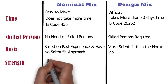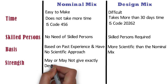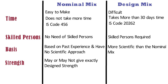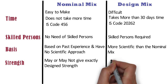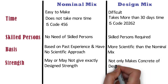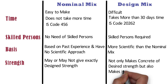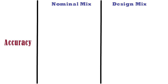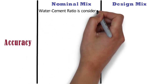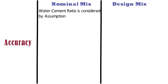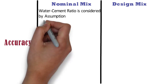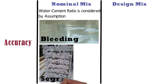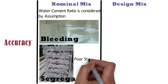Strength: Nominal mix may or may not give exactly the design strength unless all other factors like compaction, water-cement ratio and curing of concrete are strictly followed. Whereas design mix not only produces concrete of the design strength but also makes it economical. Accuracy: In case of nominal mix, the water-cement ratio is considered by assumption, so if it is not carefully controlled, it can sometimes lead to bleeding, segregation and concrete of poor strength and durability.